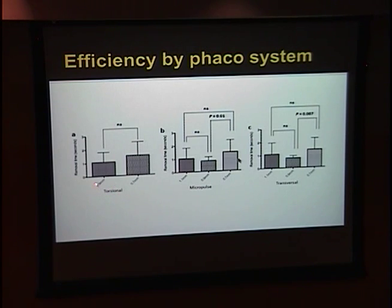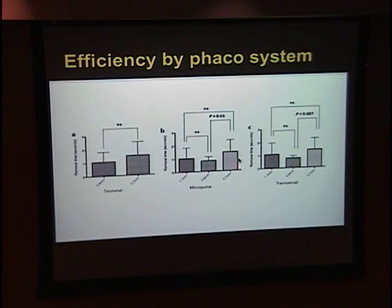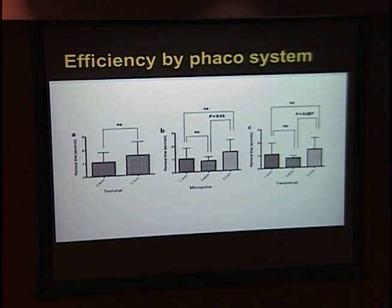The torsional arm only compared the 0.9 to the 0.7; micropulse and transversal were the other two arms. We found that in all three arms, there was a consistent increase in time required for extraction with the 0.7 compared to the 0.9. Only the micropulse and transversal showed a statistically significant difference in extraction time, but all three arms showed the same trend. Contrary to our hypothesis, the 0.9 mm tips required less time for removal compared to the 1.1 mm tips.